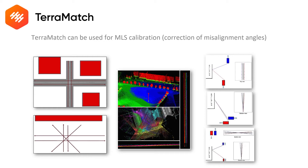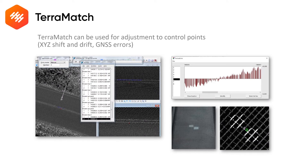From that data you can solve the calibration parameters for that system. This is an example where control points are used for adjusting position in the LiDAR data. Mobile data often have GNSS errors due to occlusions on the ground. The control points can be used for fitting the LiDAR data and adjusting for shifts and drifts. These measurements can be automatically collected in the LiDAR data if you know how the signal marker looks like. By using these measurements you can create an adjustment curve which takes care of the shifts and drifts of the GNSS position errors.